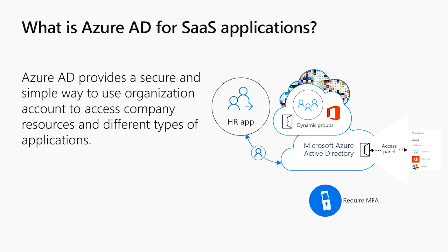After signing in, the user can launch applications from Office 365 or Azure AD My Apps Access Panel. Administrators can centralize user account management in Azure AD and automatically add or remove user access to applications based on group memberships. Administrators can also control and audit who is getting access to what resource and add an extra layer of security using other Azure AD features, such as conditional access.